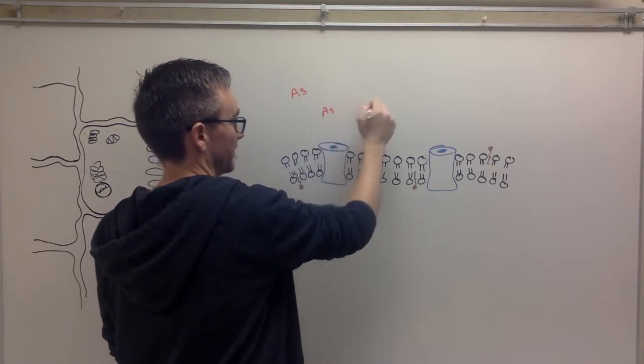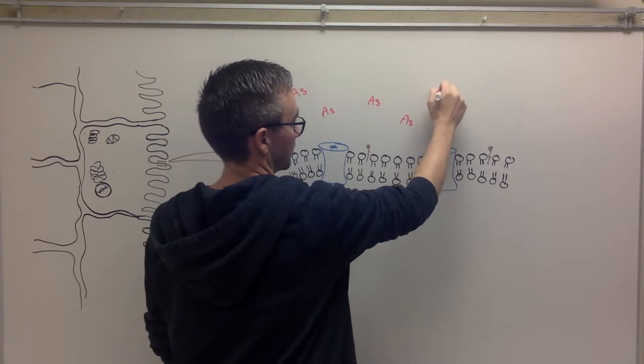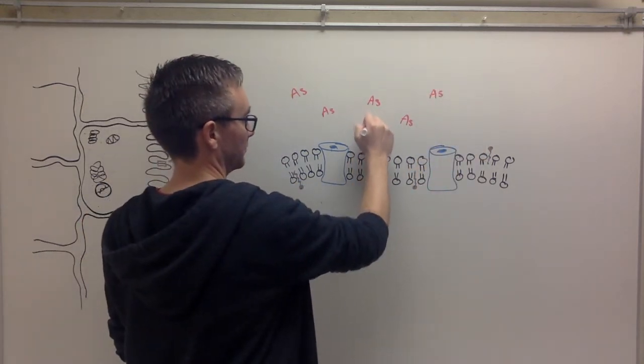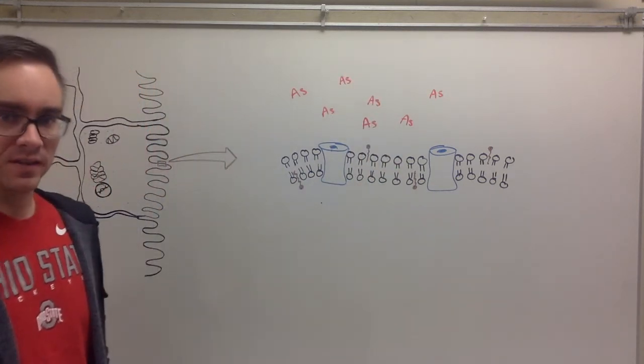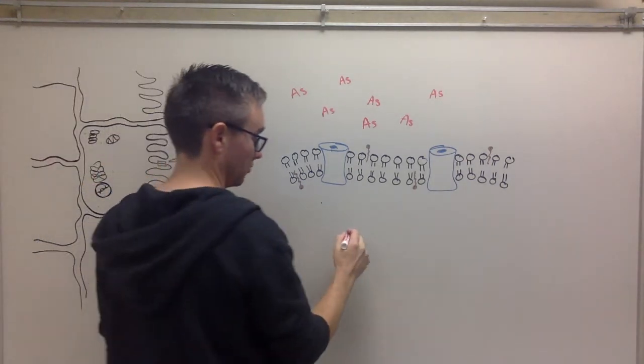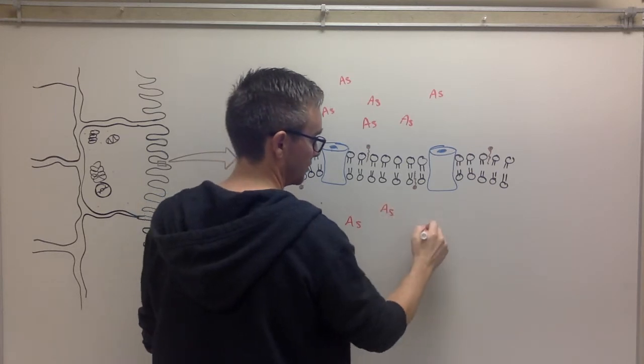Which is on the periodic table abbreviated AS. That's what it's abbreviated on the periodic table. And let's say some of it naturally diffuses from a high concentration to a lower concentration and starts to diffuse into my cells.